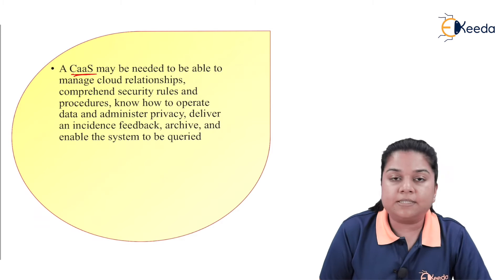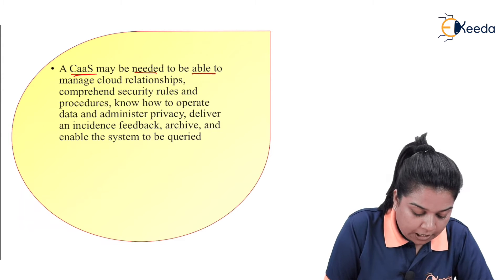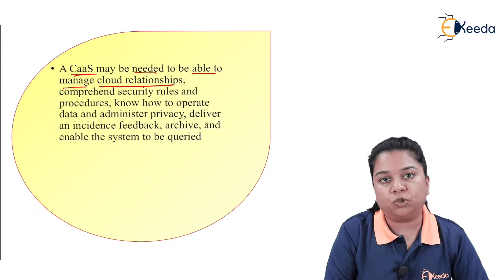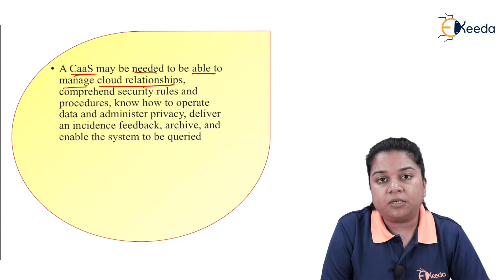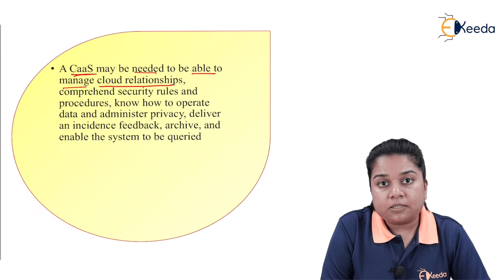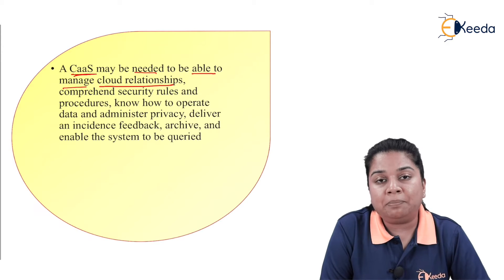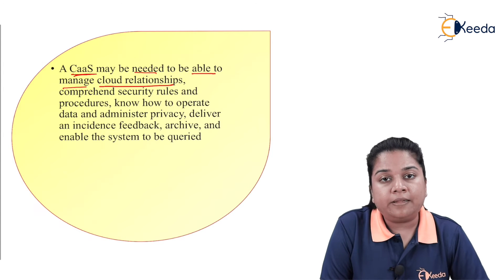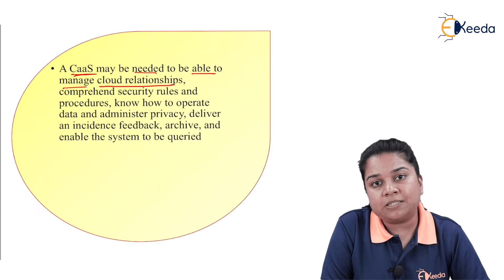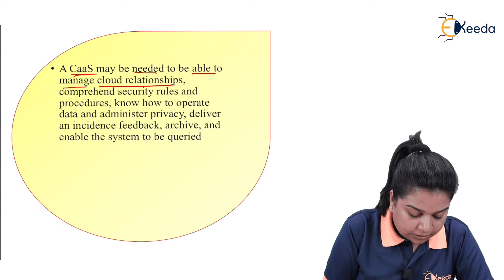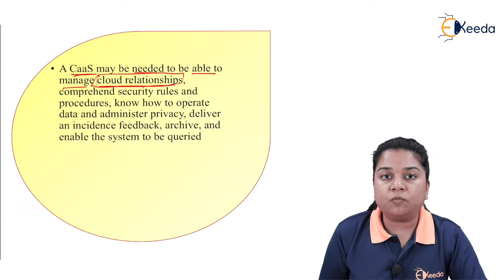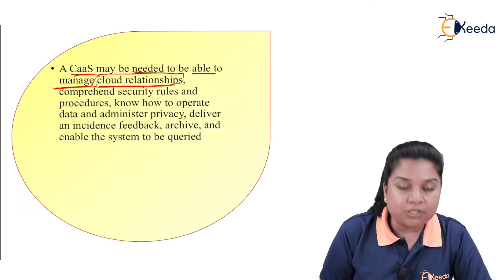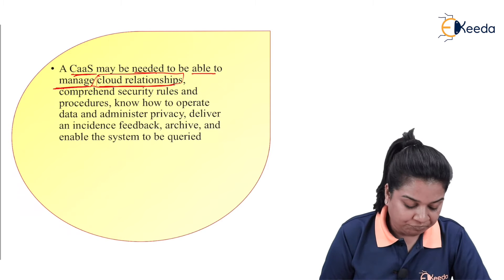A compliance as a service may be needed to manage cloud relationships — from where the infrastructure is being made or accessed, to the service provider or vendor providing a platform to access that infrastructure, to the companies accessing the platform as well as the infrastructure. These are the cloud relationships, and compliance as a service is a service which manages those relationships in the cloud.